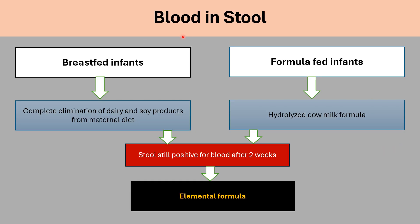Clinical approach to an infant with blood in the stool and suspected cow's milk protein allergy: if breastfed, recommend complete elimination of dairy and soy products from the maternal diet. If formula-fed, change the formula to hydrolyzed cow milk protein formula. After 2 weeks, check the stool for occult blood to confirm the diagnosis. In rare cases where it's still positive, stop breastfeeding and start elemental formula. Some insurances require stool occult blood testing to approve elemental formula, as it is extremely expensive.